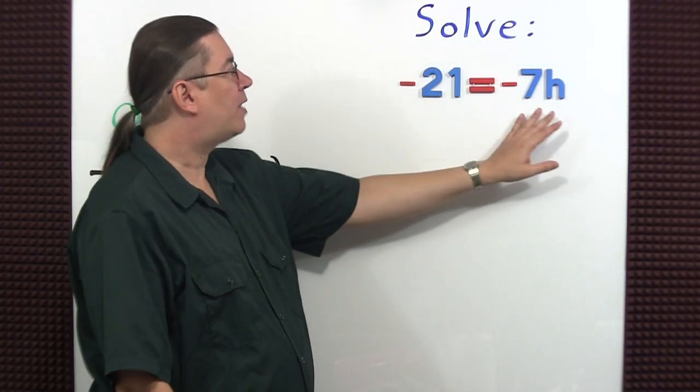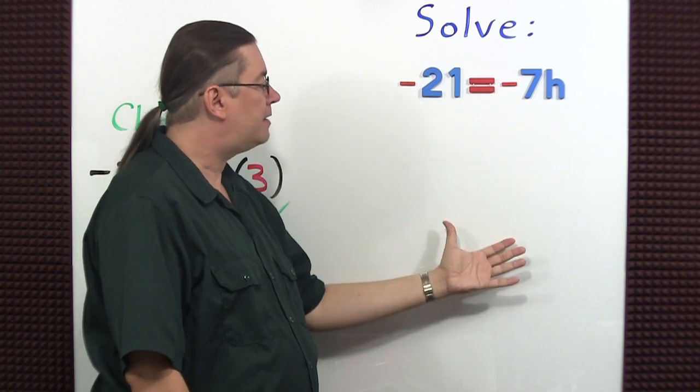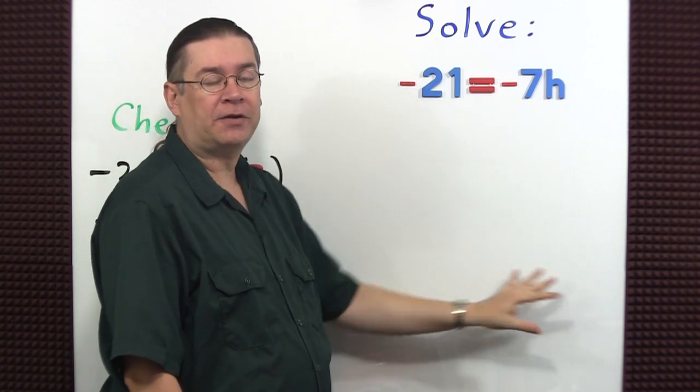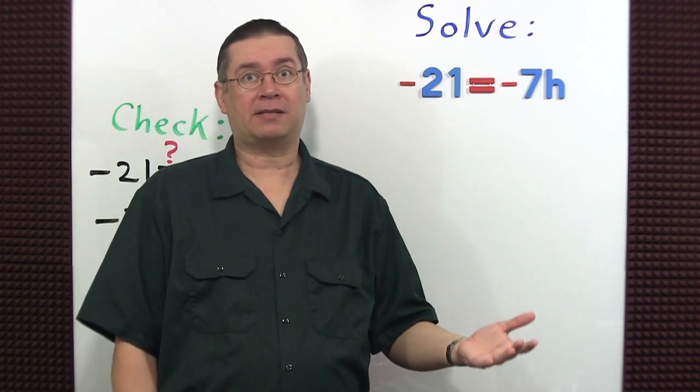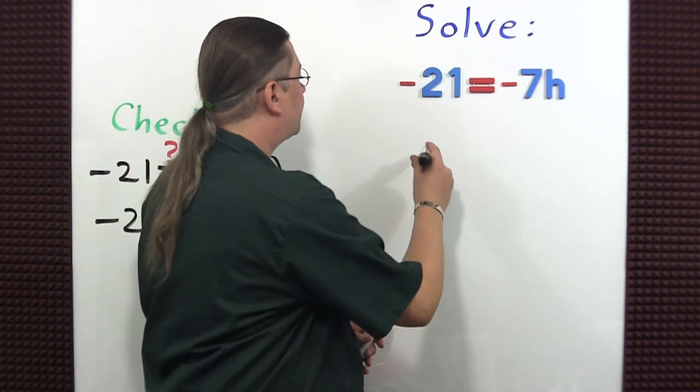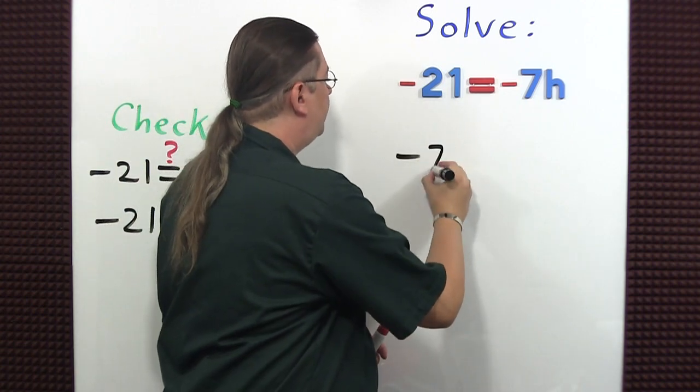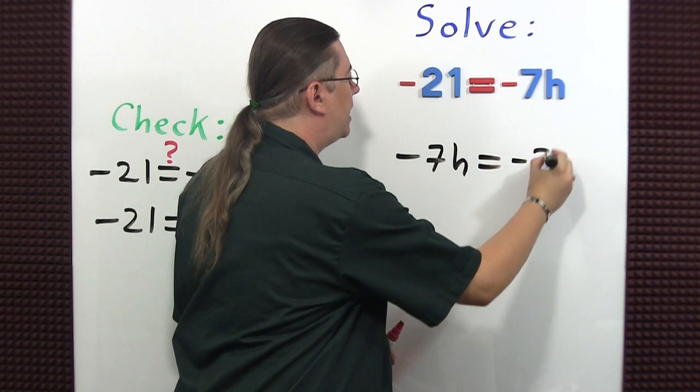Previously, when we had the variable on the right-hand side, we just solved it and then switched places at the very end. We can actually switch places in the beginning. So I'm going to just rewrite the equation as negative seven H is equal to negative 21.